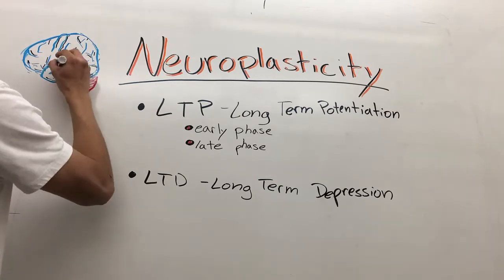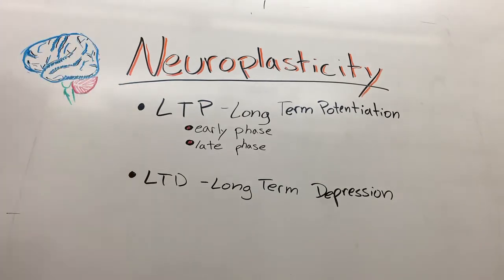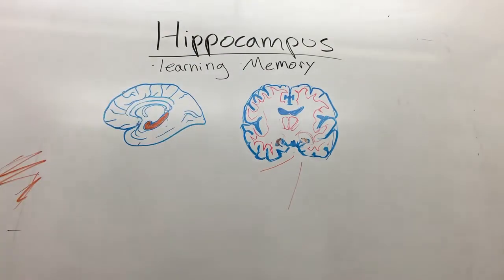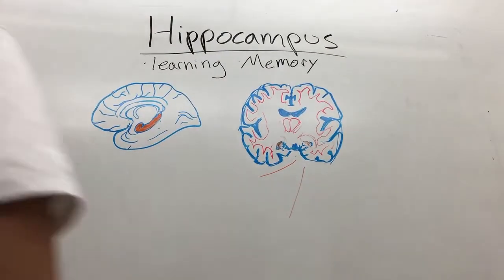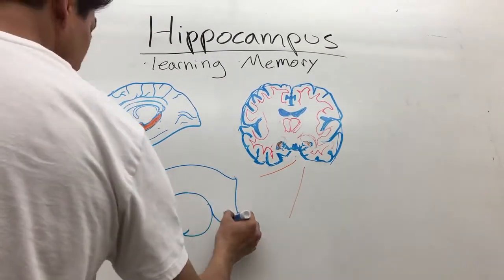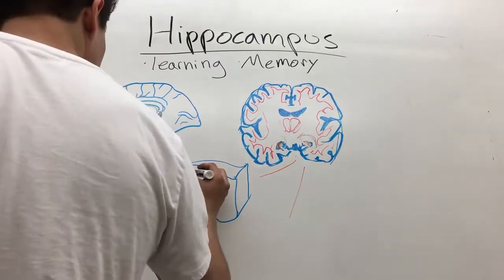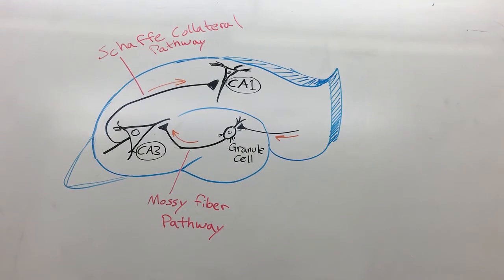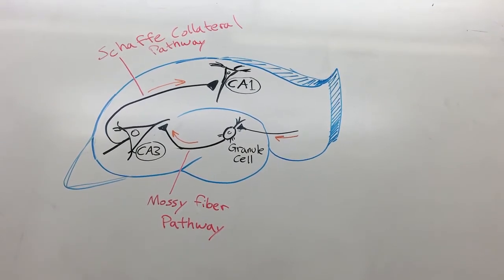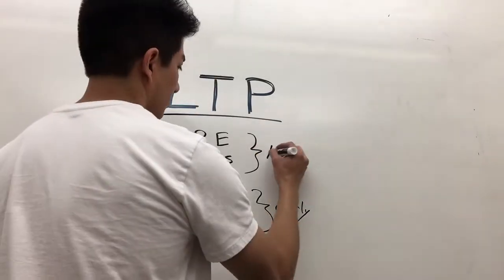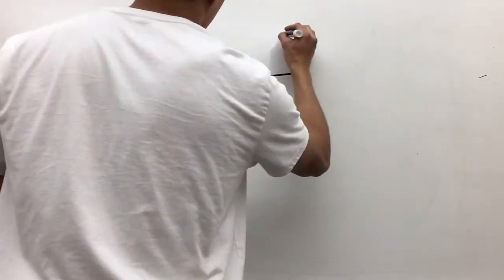Here we're going to get a basic idea on how neuroplasticity works with long-term potentiation and long-term depression. The most studied part about how LTP and LTD work is here in the hippocampus. We're going to focus on the CA3 neuron that synapses on the CA1 neuron. In LTP we have more synapses, stronger connections.